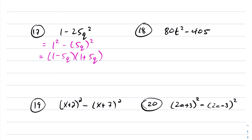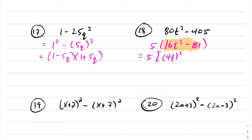For number 18, always look to simplify first — divide across by GCF of 5. Taking 80 divided by 5 gives 16t squared, and 405 divided by 5 gives 81. Now I have a difference of squares: express as 4t quantity squared minus 9 squared, so this becomes 5 times 4t minus 9 times 4t plus 9, fully factored.